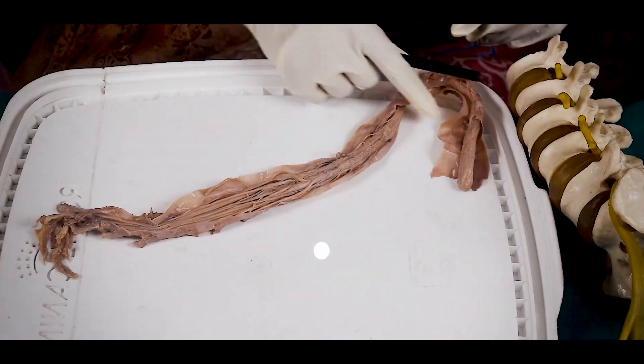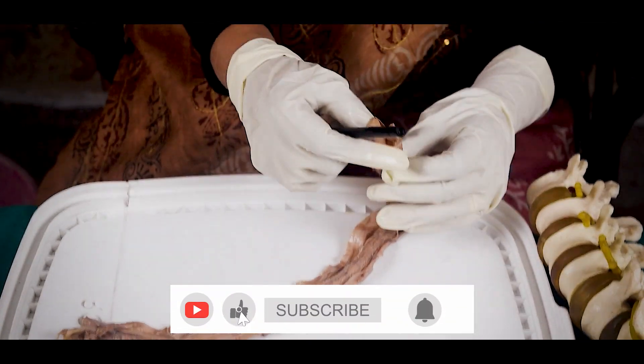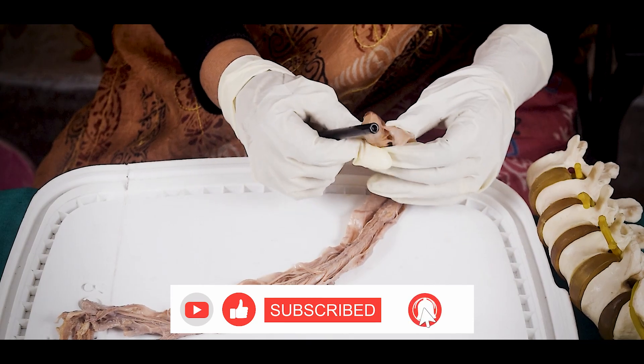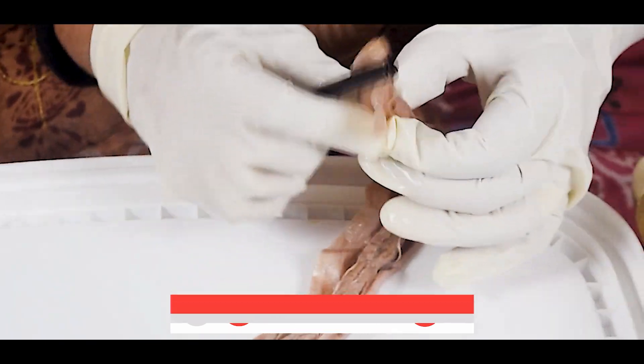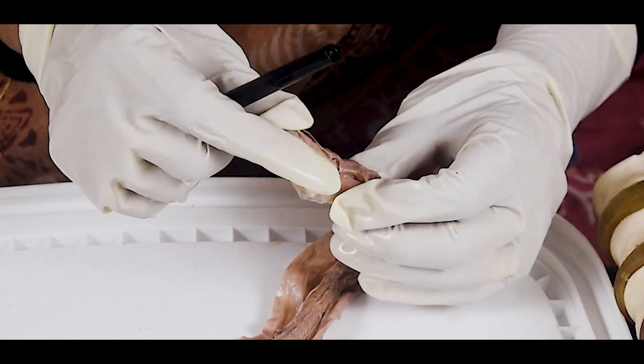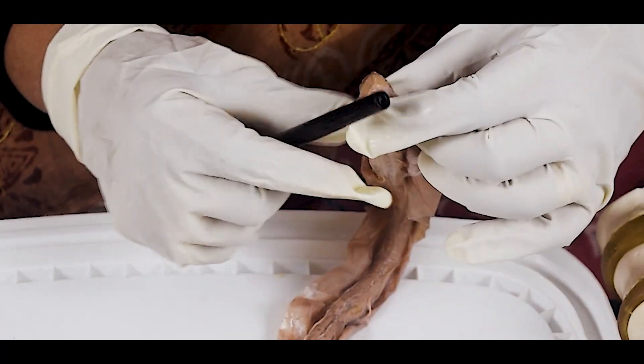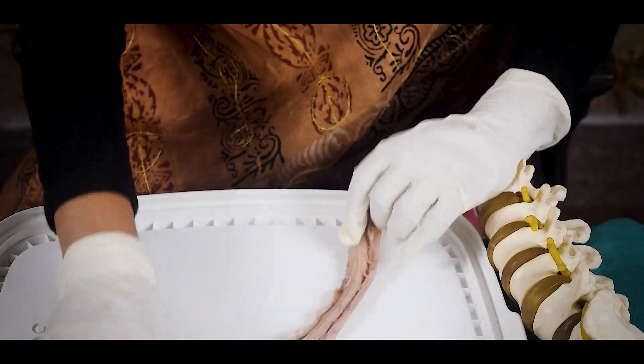So you will see the spinal cord. Now how will you identify the spinal cord, its length? You will see it is covered by the meninges. This is the dura mater and when I cut the dura mater, you will see there is the arachnoid and the pia mater, the thin one.